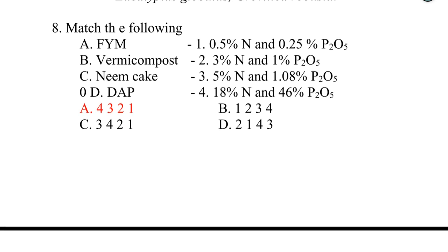Match the following. FOM contains 18% nitrogen and 46% P2O5. Vermicompost contains 5% nitrogen and 1.08% P2O5. Neemkit contains 3% nitrogen and 1% P2O5. DAP contains 0.5% nitrogen and 0.25% P2O5. The correct answer is option A: 4, 3, 2, 1.